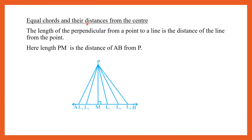Equal chords and their distances from the center: Let AB be a line and P be a point. Since there are infinite points on the line, joining them to P gives infinitely many line segments PL1, PL2, PM, PL3, PL4, and so on. The least length PM is the distance of AB from point P. So the length of the perpendicular from a point to a line is the distance of the line from the point. Therefore, PM is the perpendicular distance, and the length PM is the distance of AB from P.